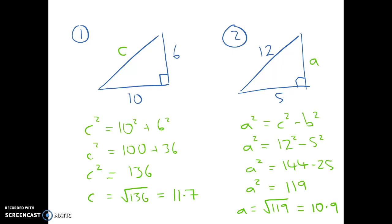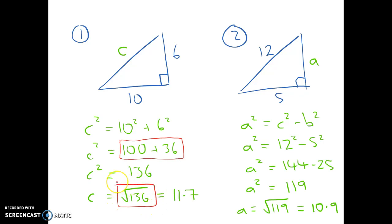If you got 11.7 and 10.9, fantastic, well done — both answers to one decimal place. Just a reminder: we had an addition for triangle 1 because we were looking for the hypotenuse, then square root at the end. We had a subtraction for triangle 2 because we were looking for one of the shorter sides, then square root at the end. Well done!